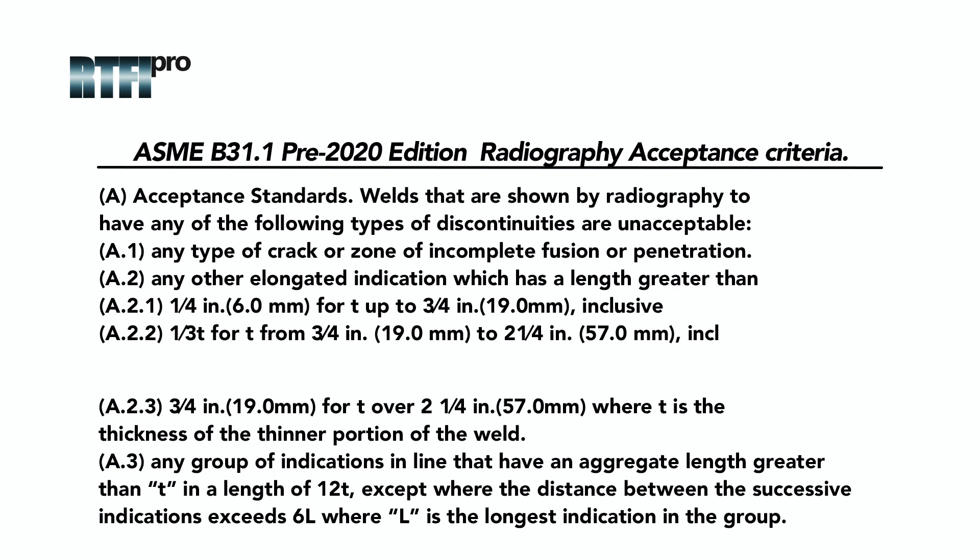A.2.2: 1/8 T for T from ¾ inch (19mm) to 2¼ inch (57mm) inclusive. A.2.3: ¾ inch (19mm) for T over 2¼ inch (57mm), where T is the thickness of the thinner portion of the weld. A.3: Any group of indications in line that have an aggregate length greater than T in a length of 12T, except where the distance between successive indications exceeds 6L, where L is the longest indication in the group.